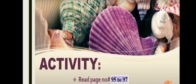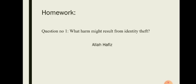Note down any questions you have and you can ask me. Your homework is to attempt the question on the accepted sheet: 'What harm might result from identity theft?' The answer can be found on page 97 under the identity theft heading — write both paragraphs as the answer. The school will also provide you with an accurate answer sheet, so you can wait for that, mark it, and note down the accurate answer in your notes. Take care of yourself, take care of your family. Allah Hafiz.